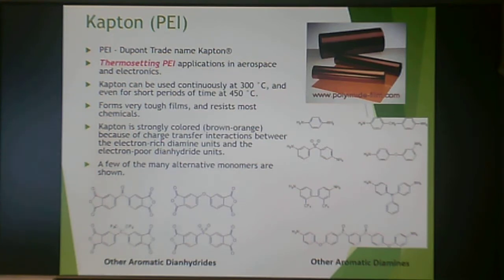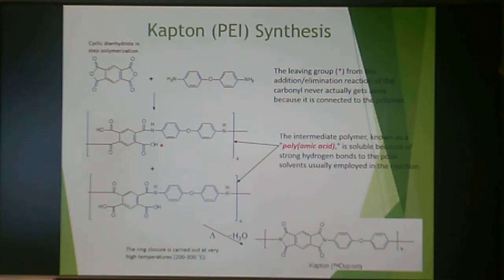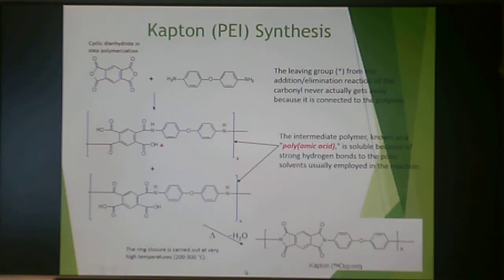So that's why you would choose the thermoset versus thermoplastic. This is the Kapton synthesis: you have a dianhydride and a diamine with an amic acid intermediate. You heat it up to remove that mole of water and close the ring to get Kapton, trademarked by DuPont.